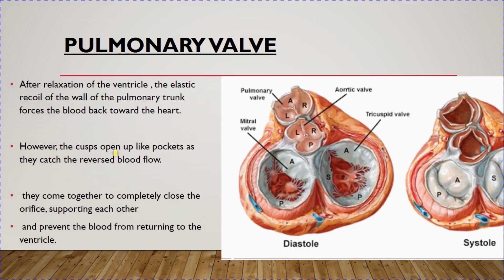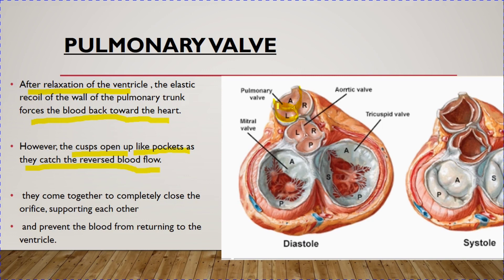During ventricular relaxation, the elastic recoil of the wall of the pulmonary trunk forces blood back towards the heart. At this time, the pulmonary valve closes: the cusps open up like pockets as they catch the reversed blood flow. The semilunar cusps come together, accumulate blood like pockets, support each other, and completely close the orifice — preventing blood from returning back to the right ventricle.